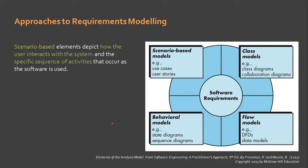Let us start with the scenario-based model. Elements in a scenario-based model depict how the user interacts with the system and the specific sequence of activities that occur as the software is used. This means representing the various scenarios that users will interact with the system. Some tools that can be used include use cases and user stories. User stories was discussed in the Agile process model.